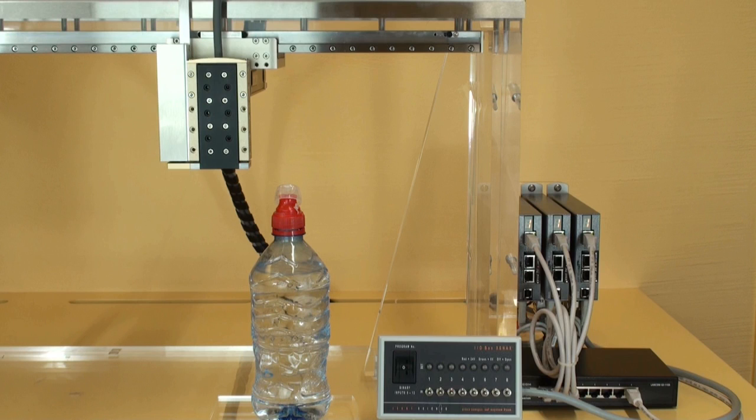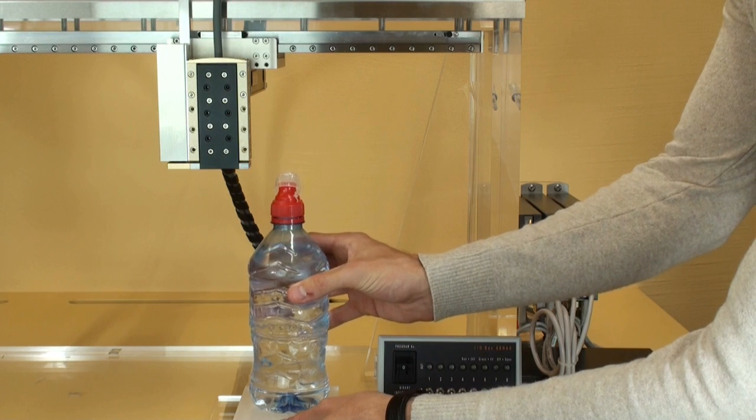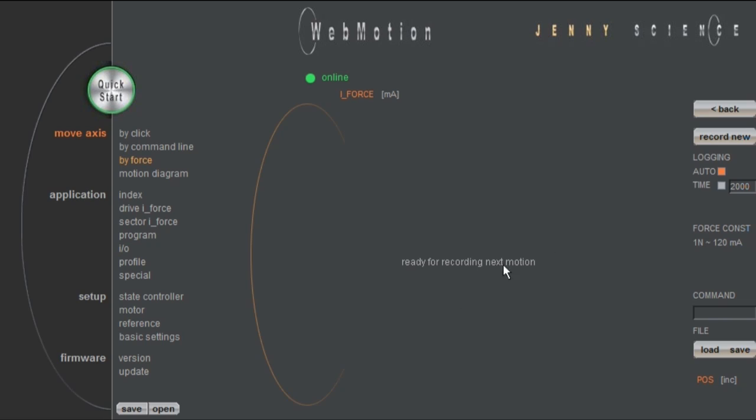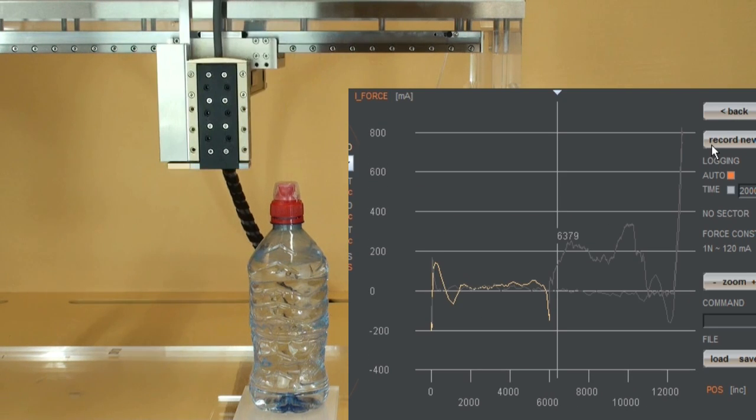When we automatically inspect the placing of the lid, we also have to take into consideration that the bottles can differ in height. The according command in the WebMotion program allows to address this issue and makes sure the sector acts relatively to the touching position. This is where the slider touches the lid for the first time. We refer to this as sector offset.